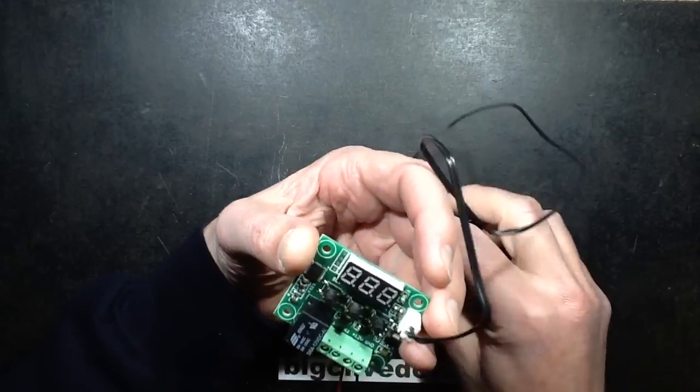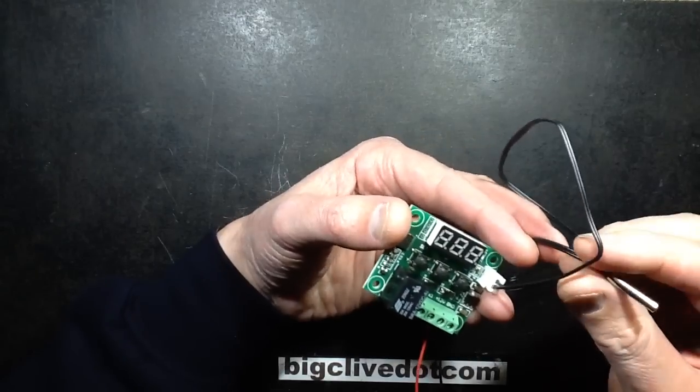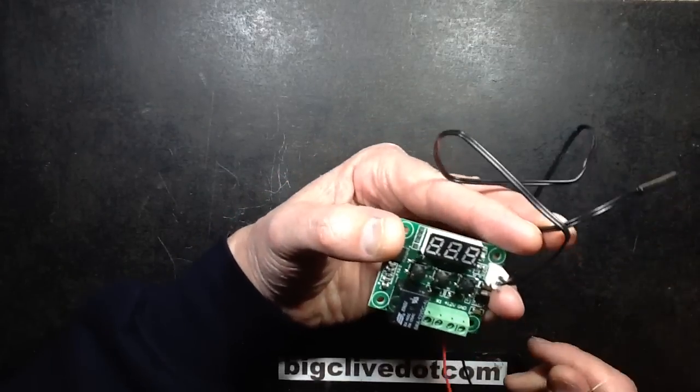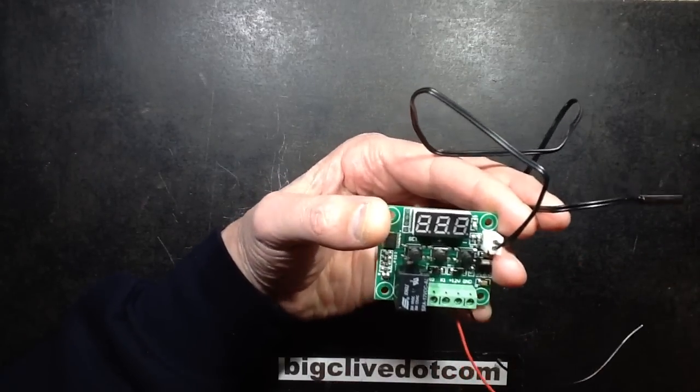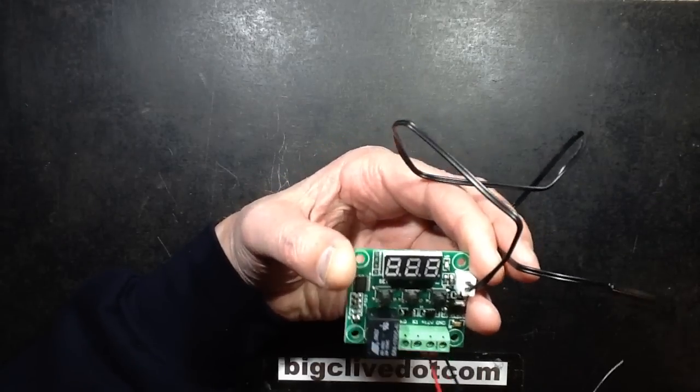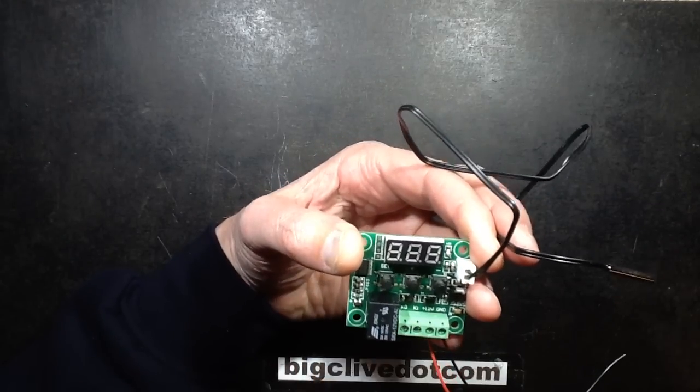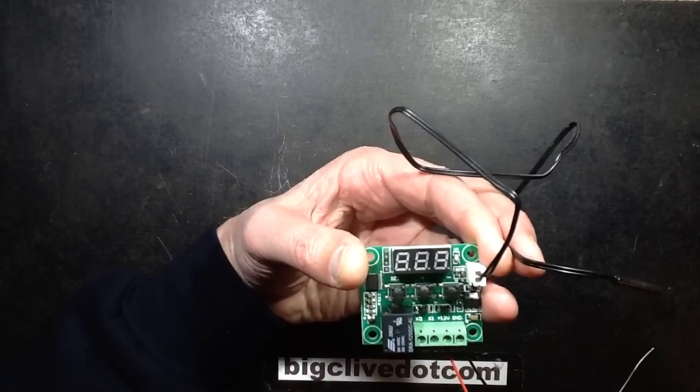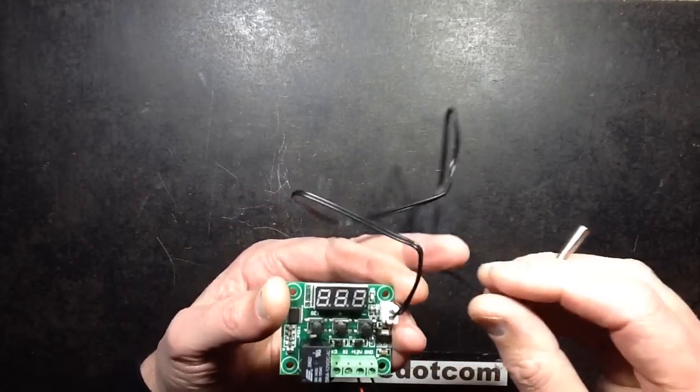These little thermistor thermostat modules keep popping up on eBay all the time. I notice they seem to be sold widely by Chinese sellers for typically around £2, that's about 3 American dollars each, which is just criminal for what you're getting. It's amazing.